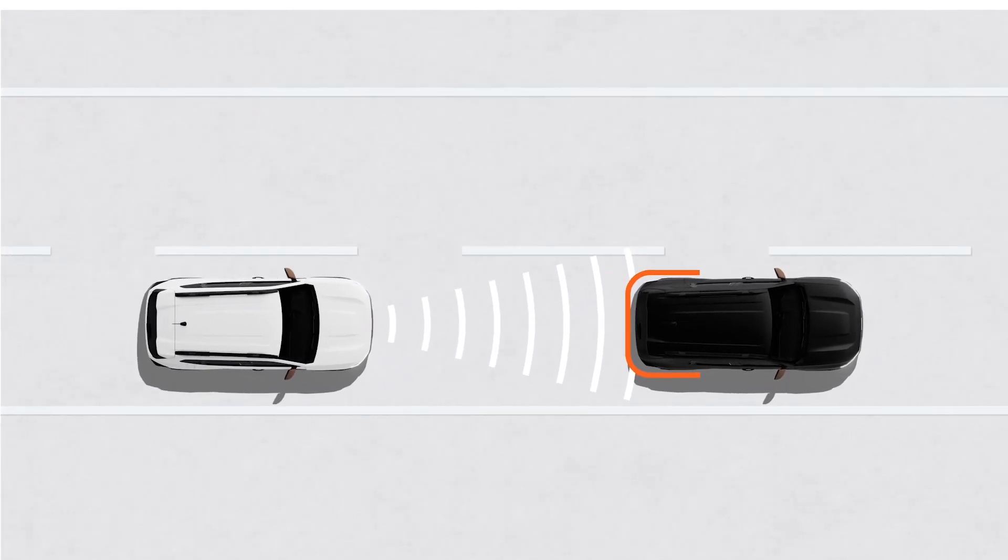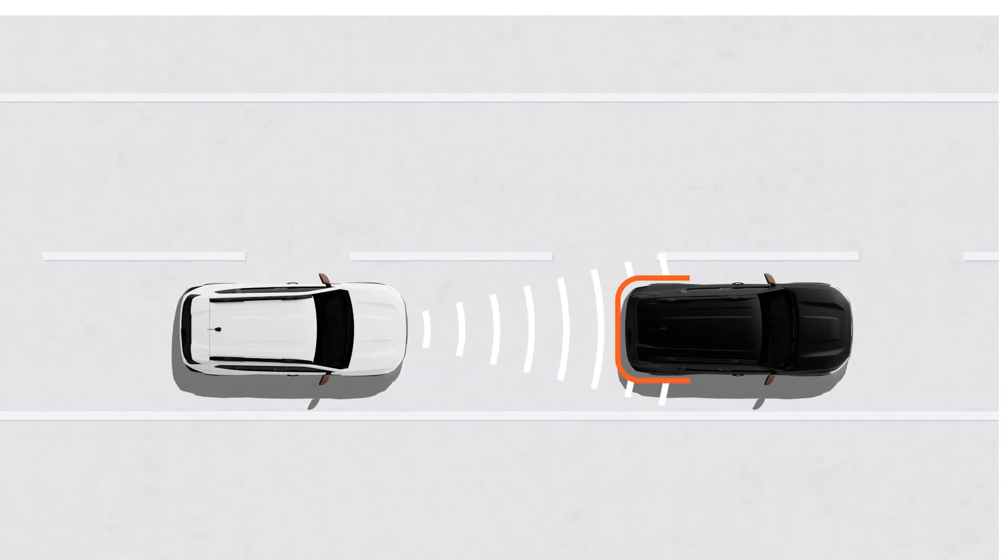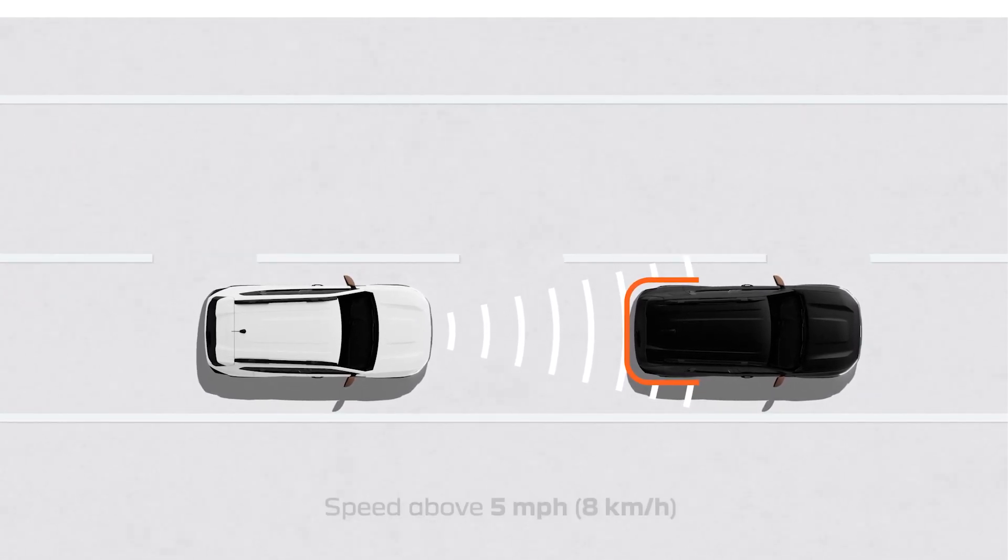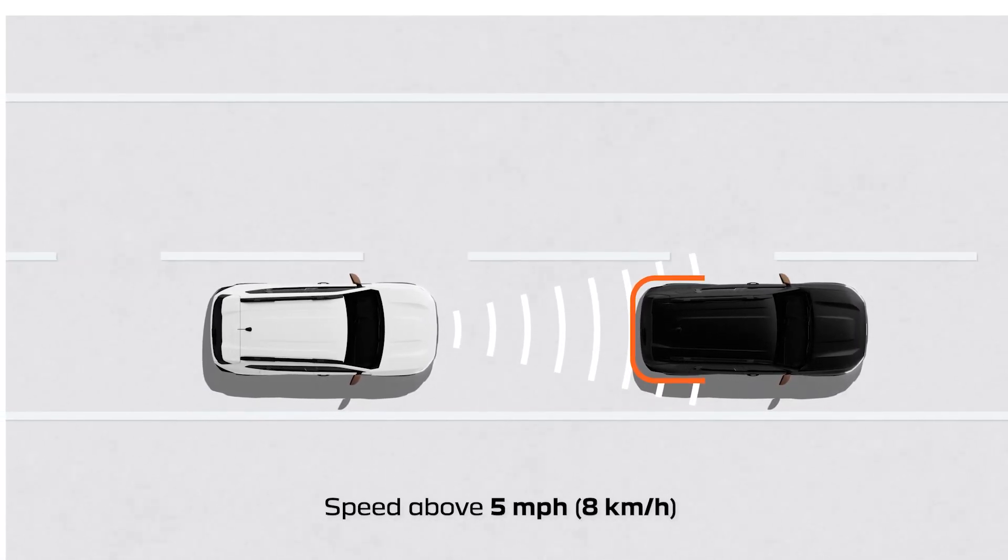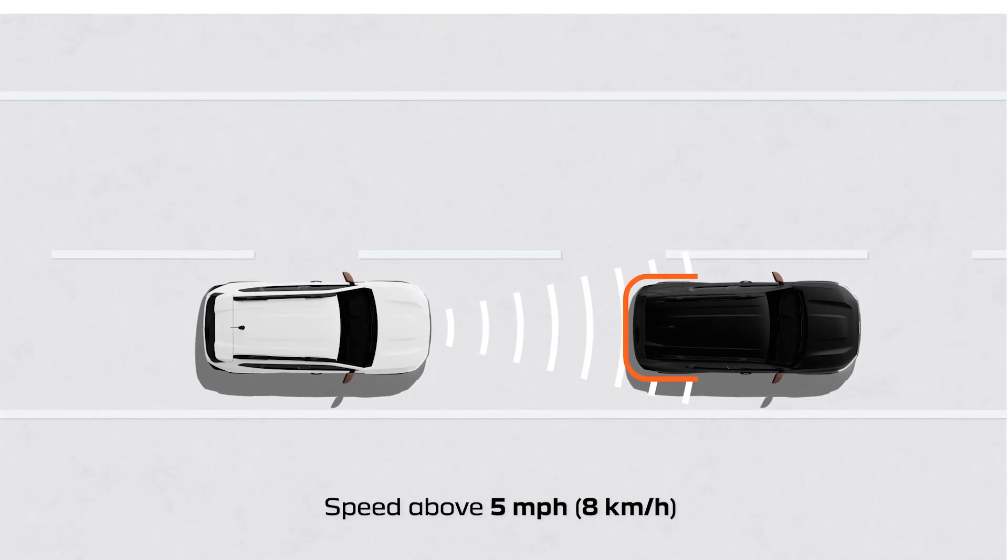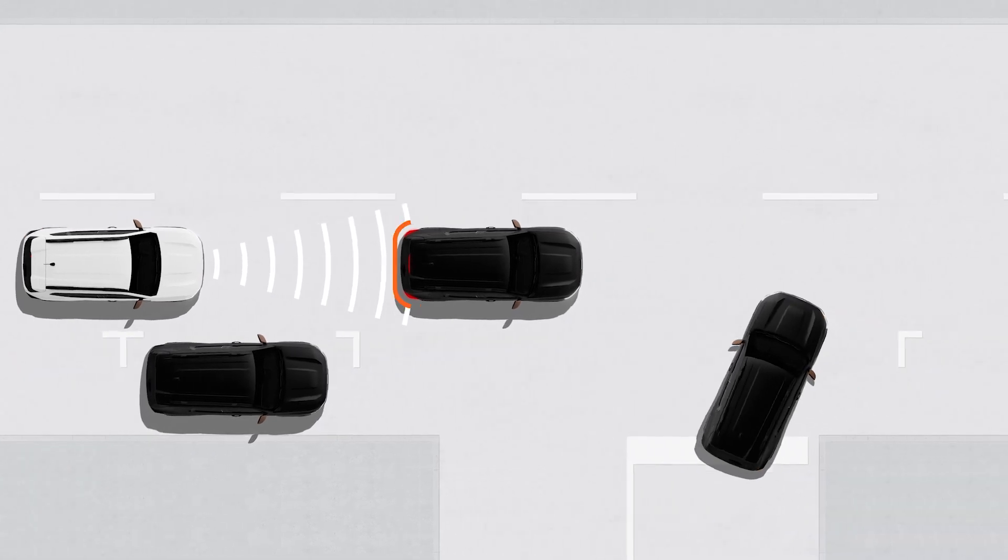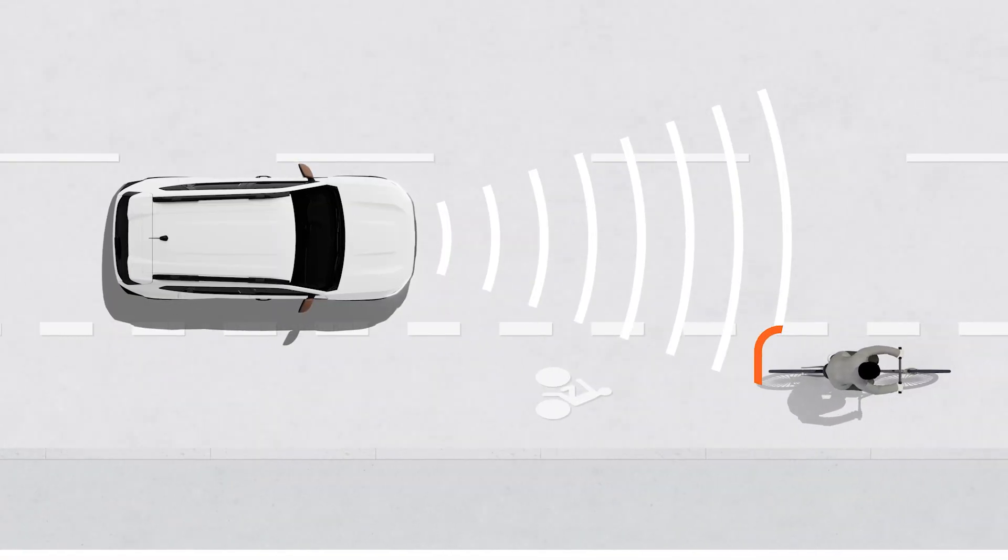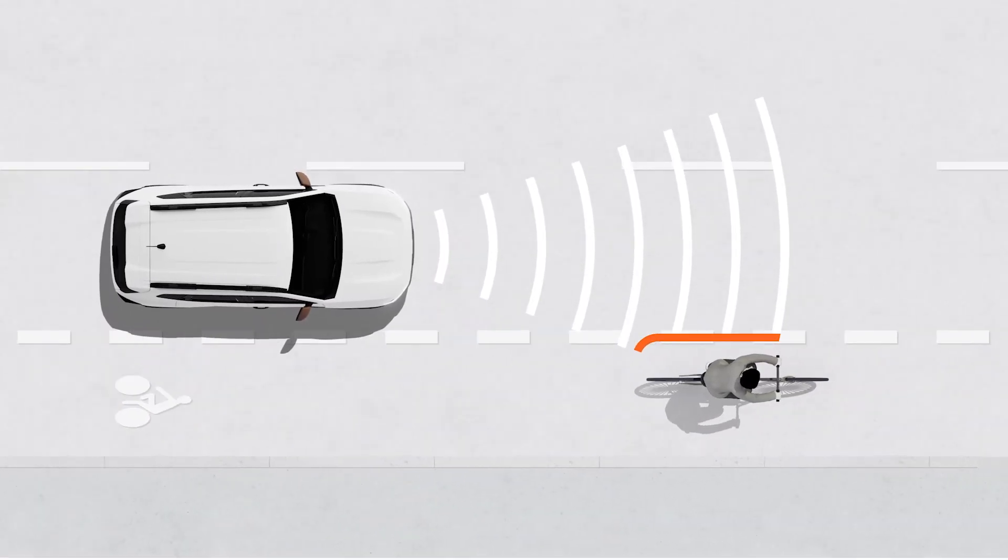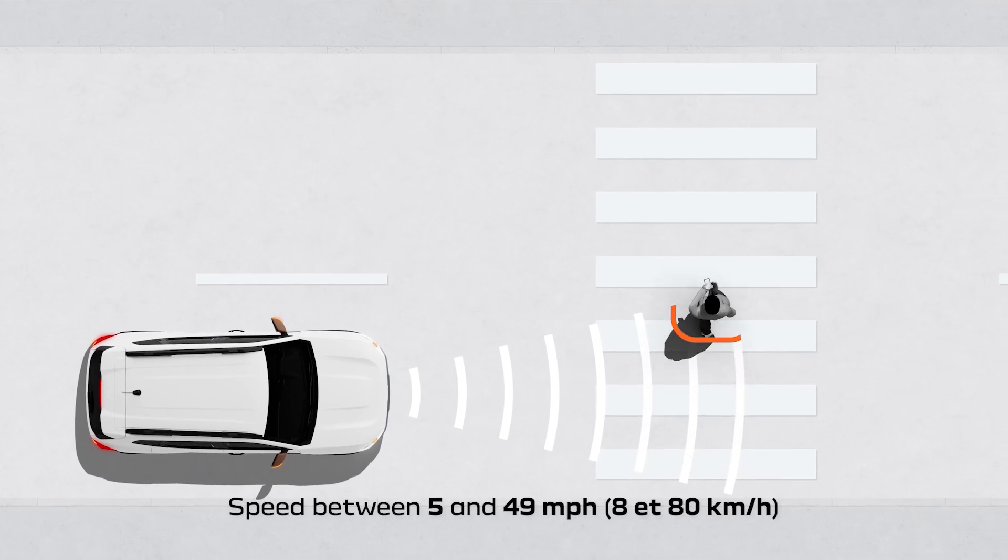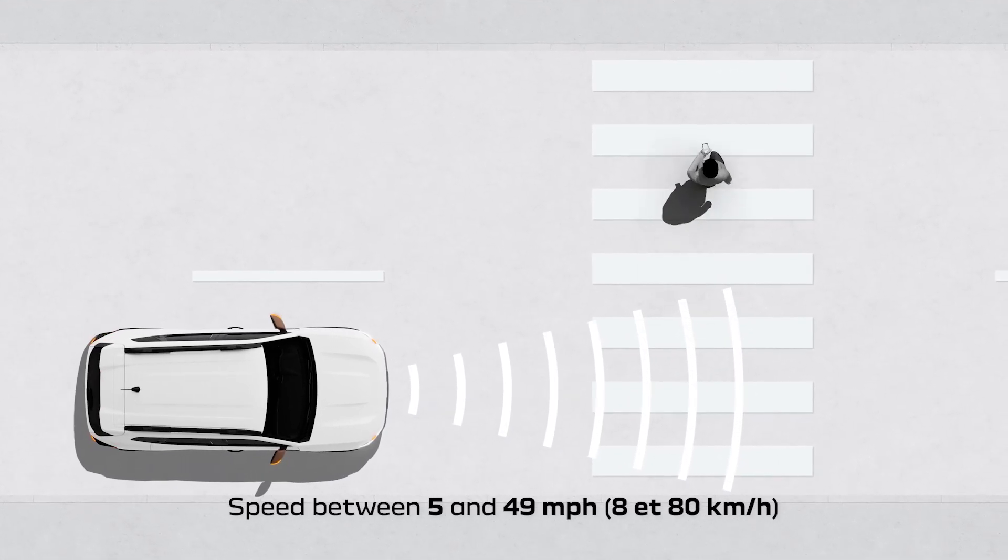The active emergency braking system detects moving vehicles ahead of you in the same lane as soon as your speed reaches around 5 mph. Conversely, stationary vehicles, pedestrians and cyclists traveling in the same lane are detected when you are driving at between 5 and 49 mph.